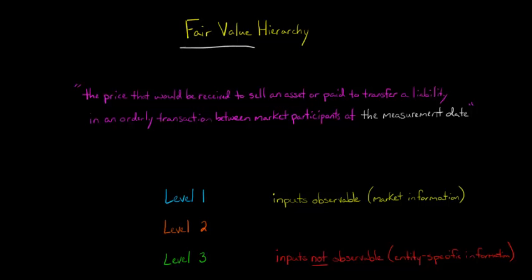So the technical definition by the Financial Accounting Standards Board is that fair value is the price that you would receive to sell an asset or transfer a liability in a transaction between market participants at the measurement date. And the measurement date is key because basically we're thinking about the price as of today instead of the price as of whenever you bought the asset, for example.